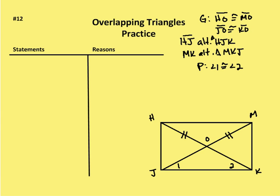Let's go to problem number 12. I'm given that HO is congruent to MO, JO is congruent to KO, segment HJ is the altitude for triangle HJK, MK is the altitude for triangle MKJ, and I'm going to prove that angle 1 is congruent to angle 2.